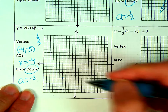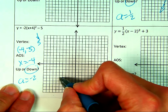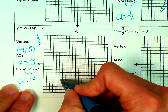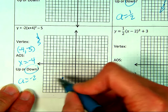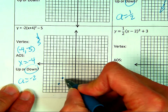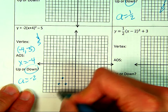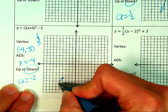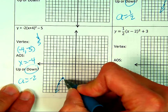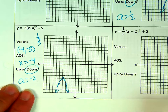Instead of going over 1 and down 1, because A is 2, it's over 1 and down 2. Then it would be over 1 and down 6, which is off my grid, so I don't have to do any more. But you could on a bigger piece of graph paper.